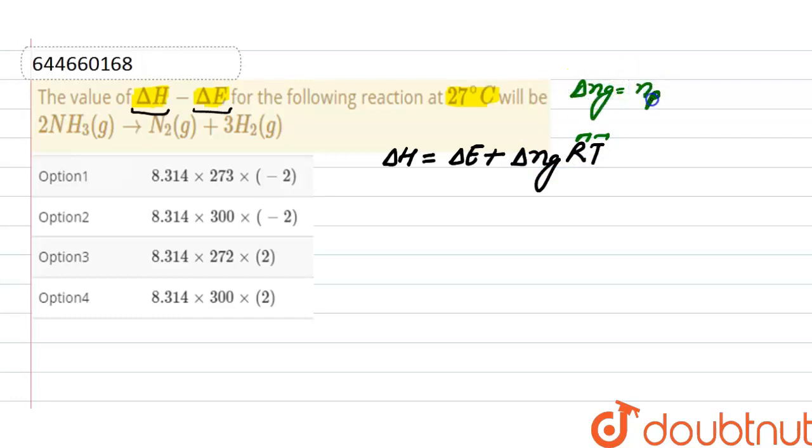And here there are 3 plus 1, that is 4 moles of gaseous product, minus 2 moles of gaseous reactant. So the value of Δng here is 2.